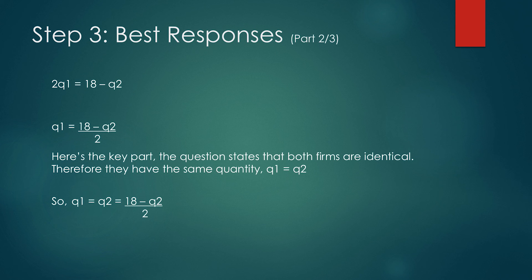Simplifying further, we get q1 equals (18 minus q2) over 2. Here's the key part: the question states that both firms are identical. Therefore, they have the same quantity, q1 equals q2. So q1 equals q2 equals (18 minus q2) over 2.